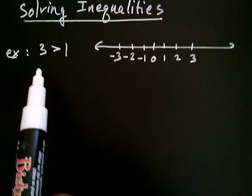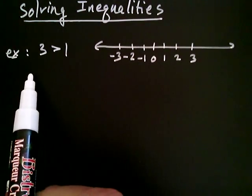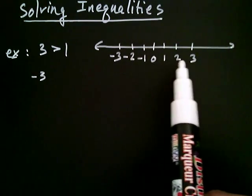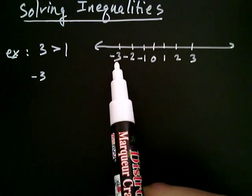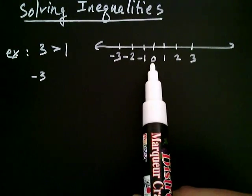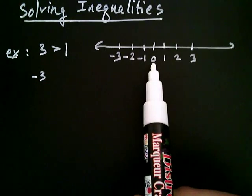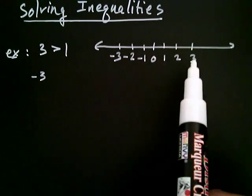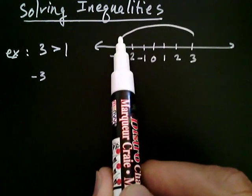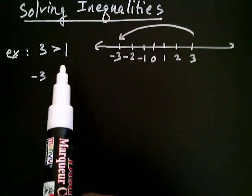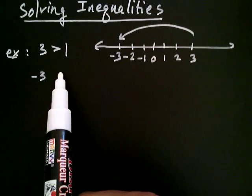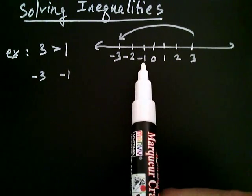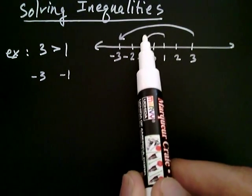What would happen if we took three and multiplied it by negative one? Well, three would become negative three. We have a special way of looking at that process: when you multiply a number by negative one, the number gets reflected into its mirror image across zero. So three times negative one mirrors three to negative three. Likewise, one multiplied by negative one gets reflected to negative one.